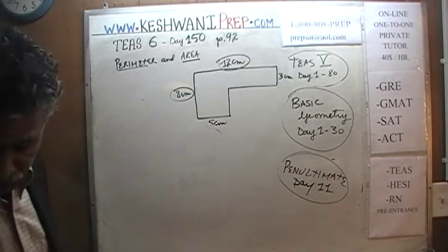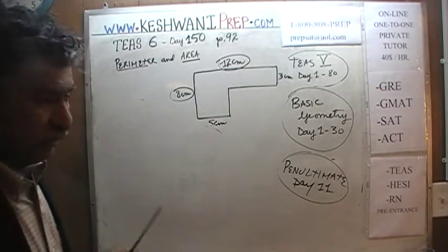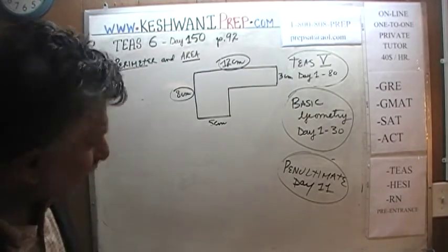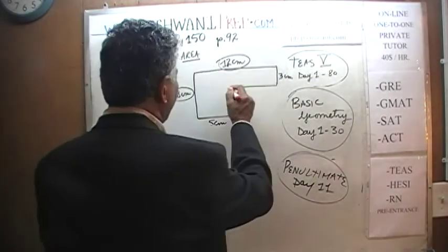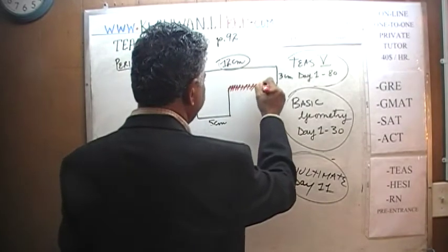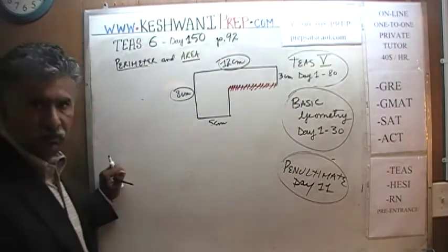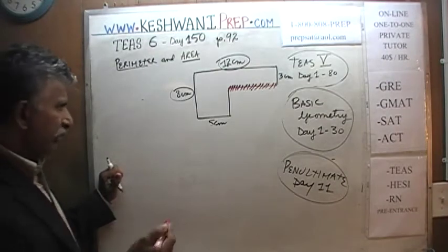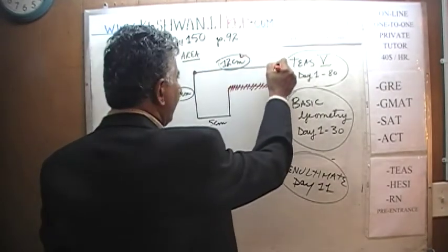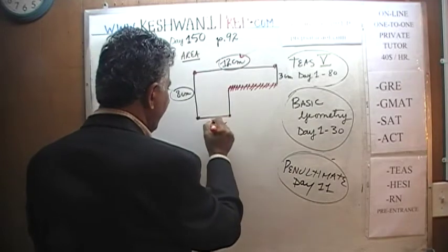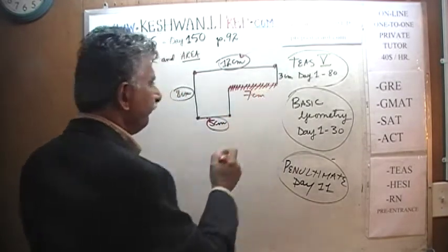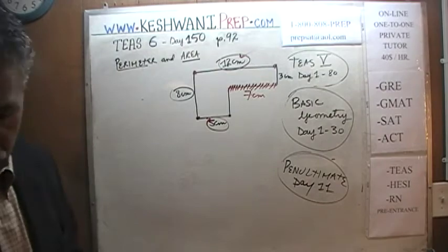If you want to work it out step by step, what is not given to us is the missing side. They don't tell us how long that side is, and they expect us to find it out — which we will. If from here to here is 12 and from here to here is 5, then this missing side must be 7. Now add them all up going clockwise so we don't miss anything.